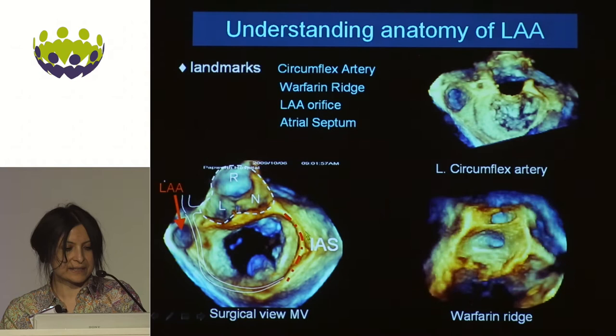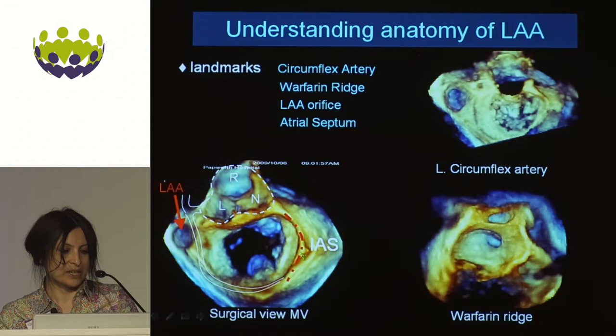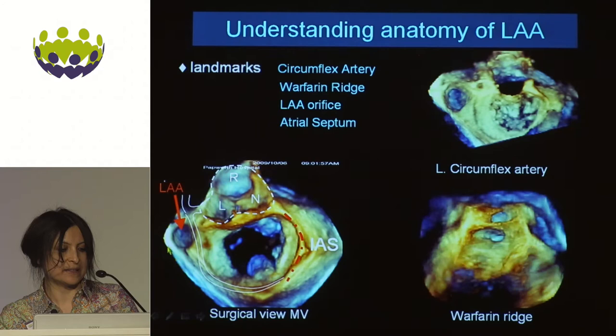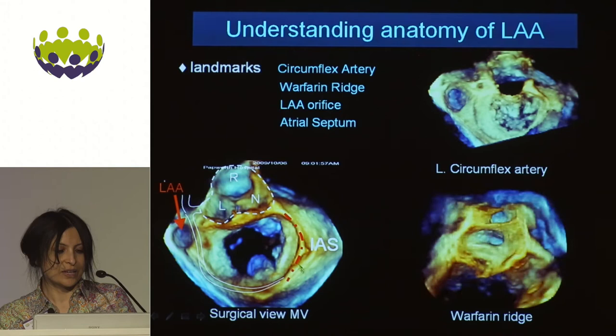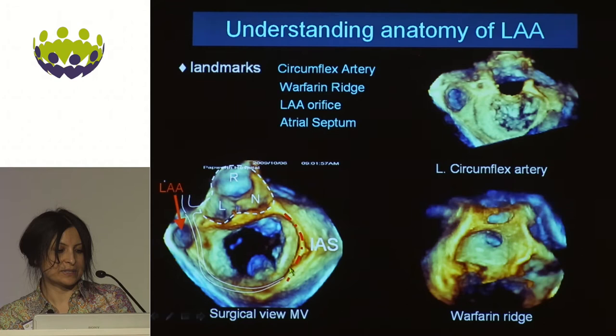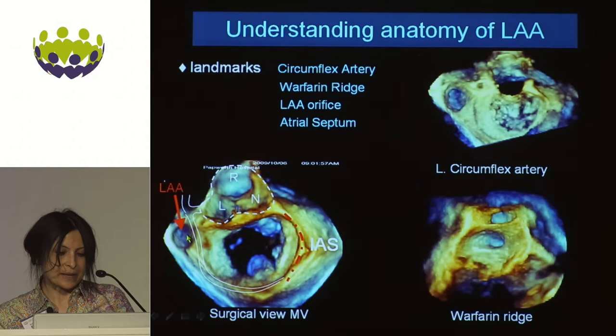The interatrial septum's relationship to the LA appendage is also key. Above will be your left pulmonary veins and the warfarin ridge. You need to ensure that you have the right angle — usually you'll find that the inferior posterior part of the fossa ovalis is the best position to place catheters to angle such that you enter the orifice correctly.